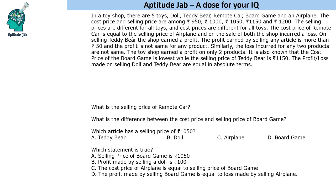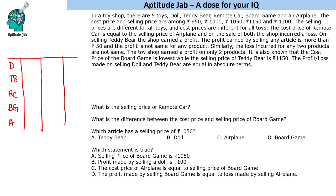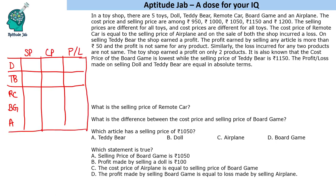We have these 5 items: doll, teddy bear, remote car, board game, and airplane. We will track three things: selling price, cost price, and profit or loss. We know that if selling price is more than cost price, we have profit; if less, there is a loss. Since these 5 values are being used both as selling price and cost price, the net profit or loss will be zero.